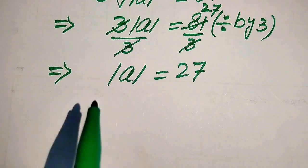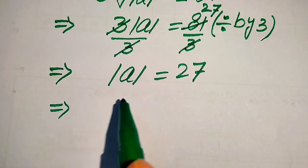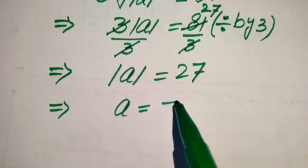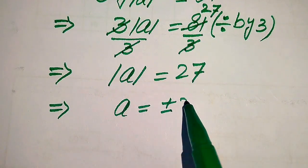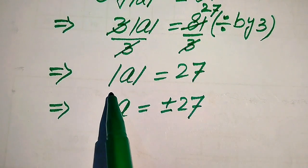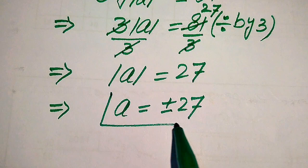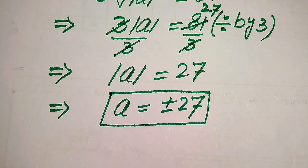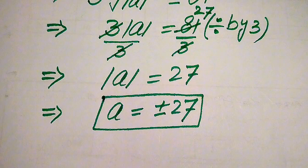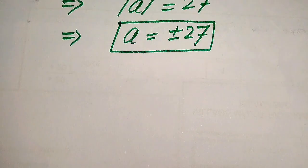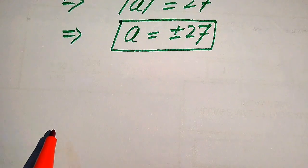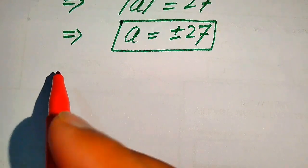When we remove this absolute value sign, we write the plus-minus sign on the right-hand side, and we get the values of a equals to plus or minus 27. So there are two roots from the first method. In the next step we need to verify these roots — we check whether both roots satisfy the given equation or not.